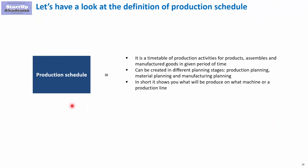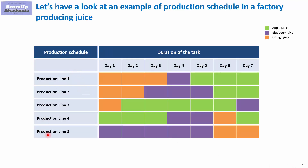Another term you may come across is the production schedule or the production plan. This is simply a timetable where we put all the activities that we are supposed to carry out in production. Usually it is organized around machines or production lines. Let's have a look at an example: imagine that we are producing three types of juice and we have five production lines. Here you have an example of a production schedule for seven days — five lines, three products, three types of juice — and we simply have to decide what we will be producing on which production line.